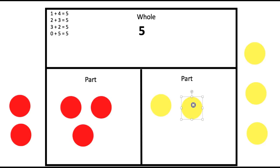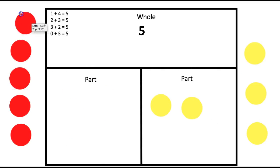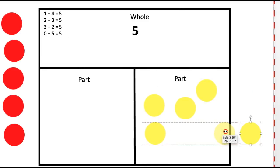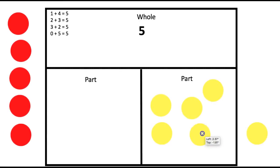Okay, now, if I take all of the red counters out, and start with zero in the first part, and put all five counters in the second part, let's see how many we have now. Because we know that zero plus any number is that number.